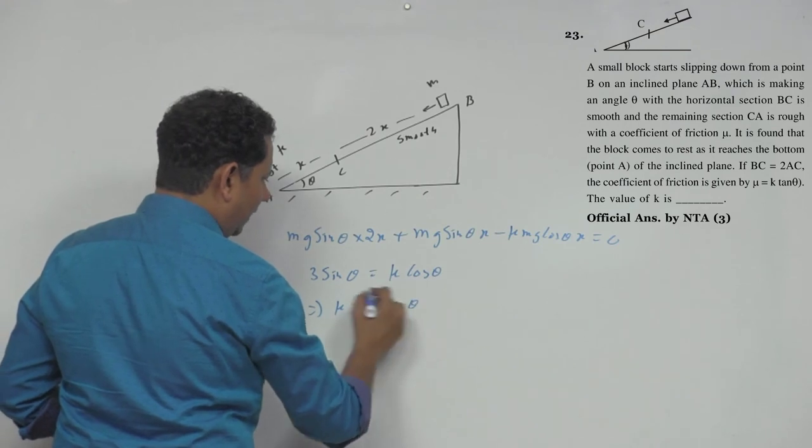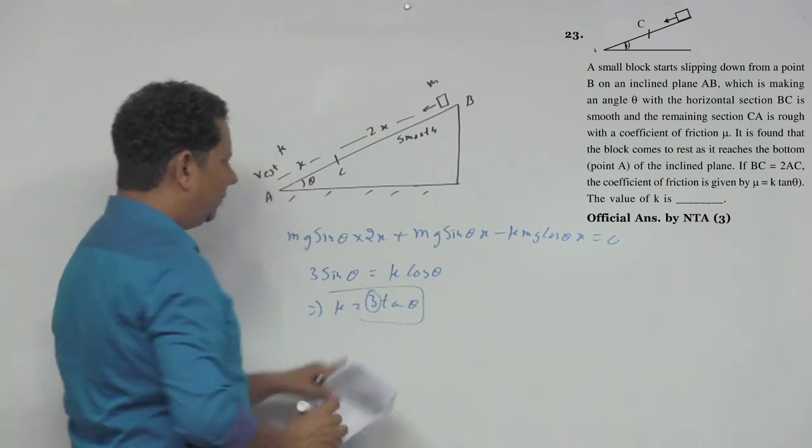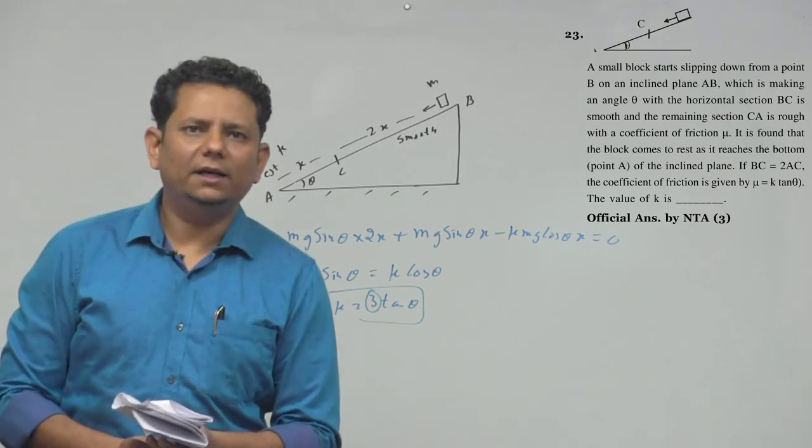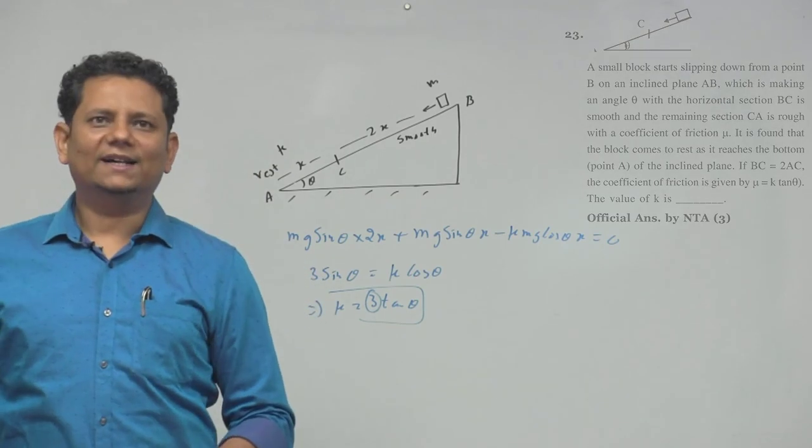Which implies mu equals 3 tan theta, so hence k equals 3 would be the right answer.